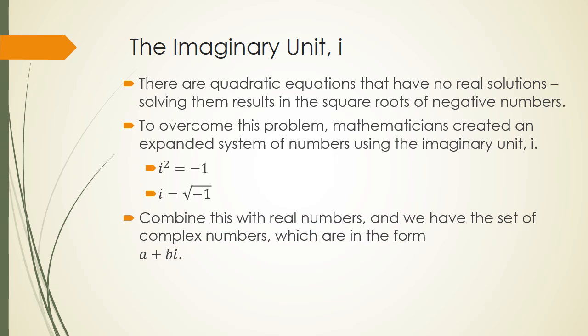When we combine this unit with real numbers, we have the set of complex numbers. Complex numbers are in the form a plus bi. A is the real component, and bi is the imaginary component.